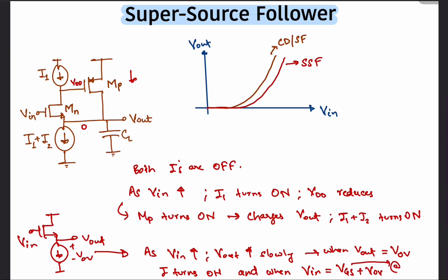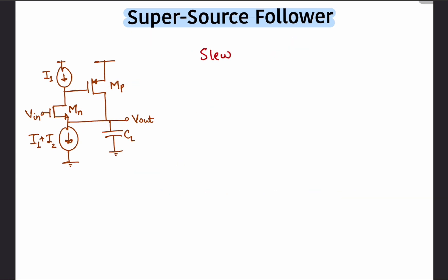Before concluding this video, I would also like to talk about the slew rate of the supersource follower. Both the ordinary source follower and the supersource follower have an asymmetrical slew rate. For the supersource follower as shown, the slew rate while discharging the output would generally be much lower than the slew rate while charging the output.